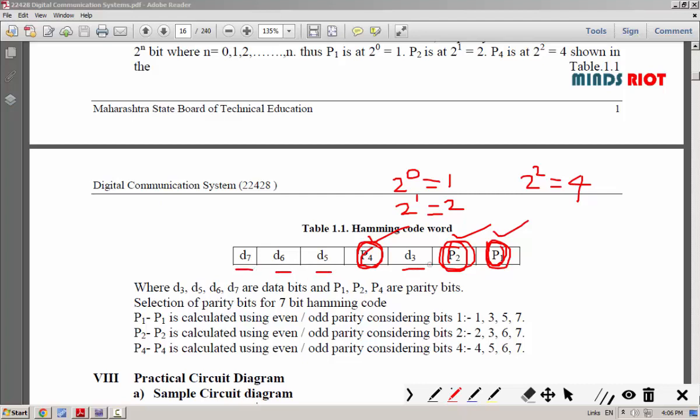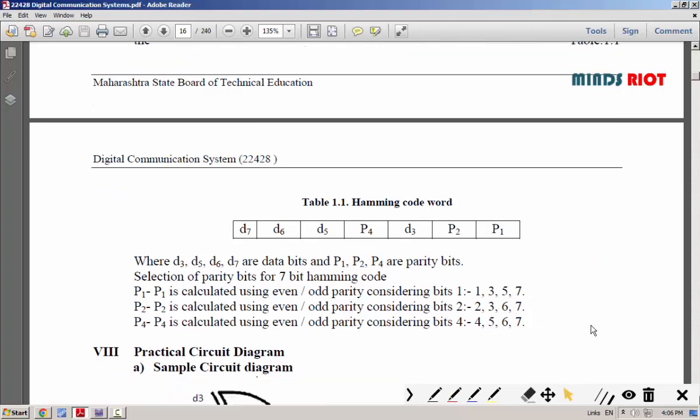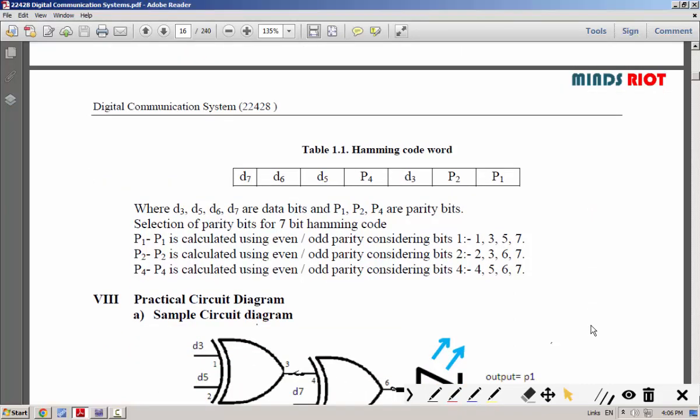Now, the last step that we will have to follow is how to set the values of this parity bit. To set the values of the parity bit, we will use a simple formula. First parity bit: check 1 bit and skip 1 bit.